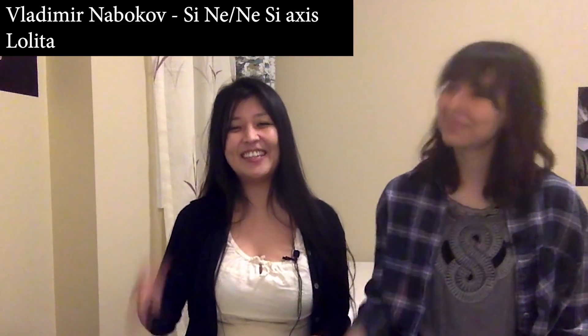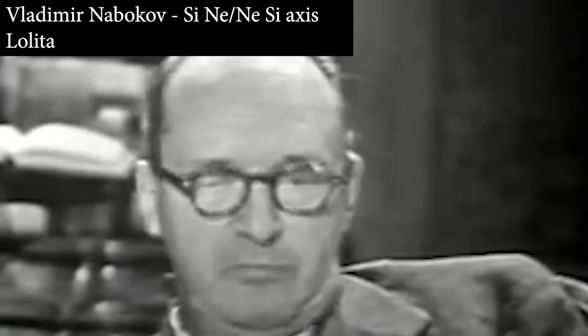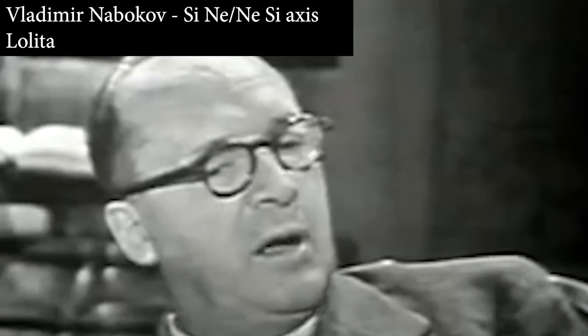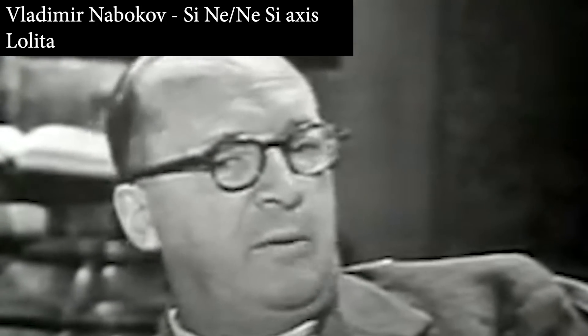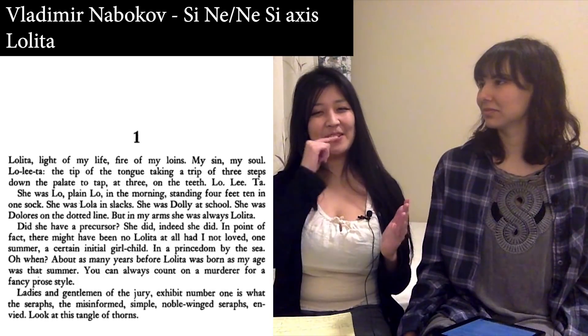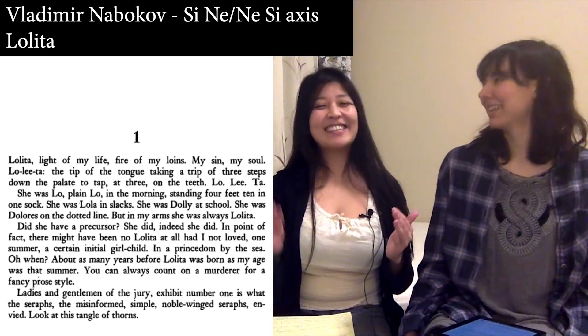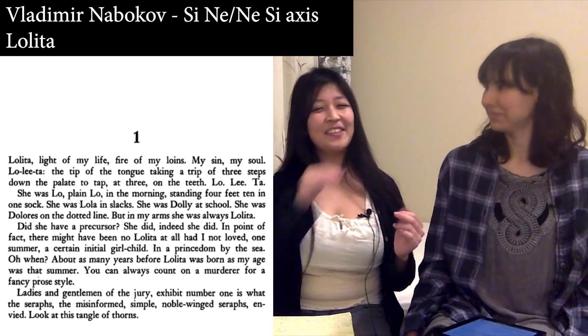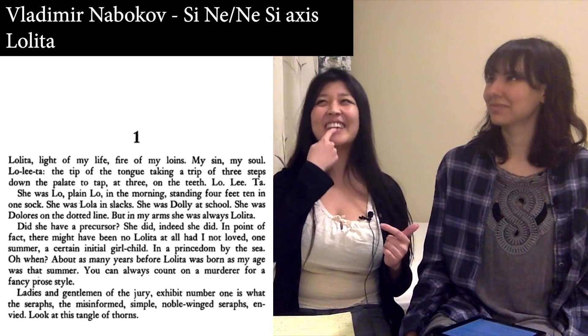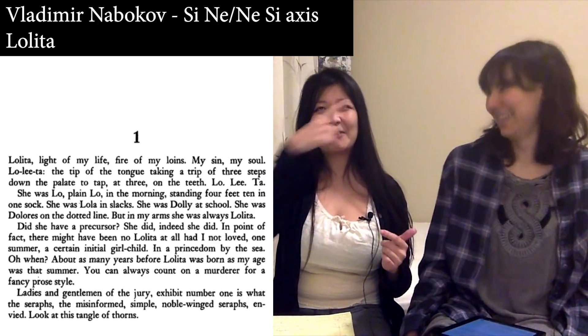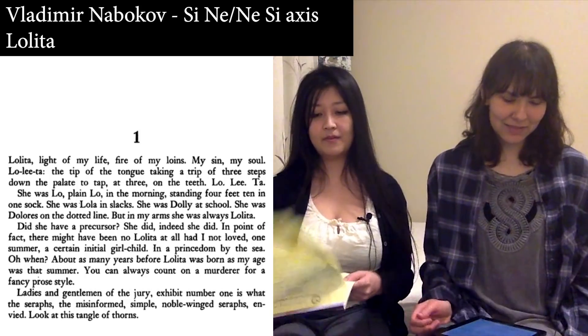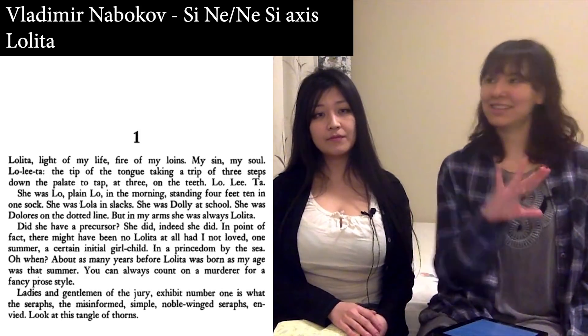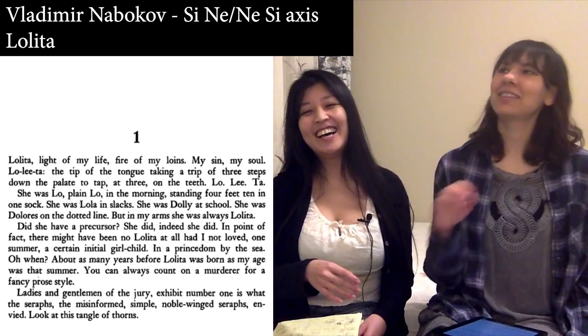Moving on to N-I-S-I — look how his eye movements are super smooth, so he's either in S-I or S-I. This Lolita excerpt: the part where Nabokov goes 'the mouth taking a trip down the palate to tap three times' — it's so weirdly physical and linguistic at the same time. And when I do it, it is going from the roof of my mouth to my teeth. Another one: 'Lolita in this thing and Lolita in that thing... Dolores on the dotted line.'